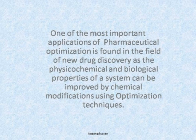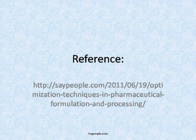One of the most important applications of pharmaceutical optimization is found in the field of drug discovery, as the physicochemical and biological properties of a system can be improved by chemical modifications using optimization techniques. For more information, visit SayPeople.com.